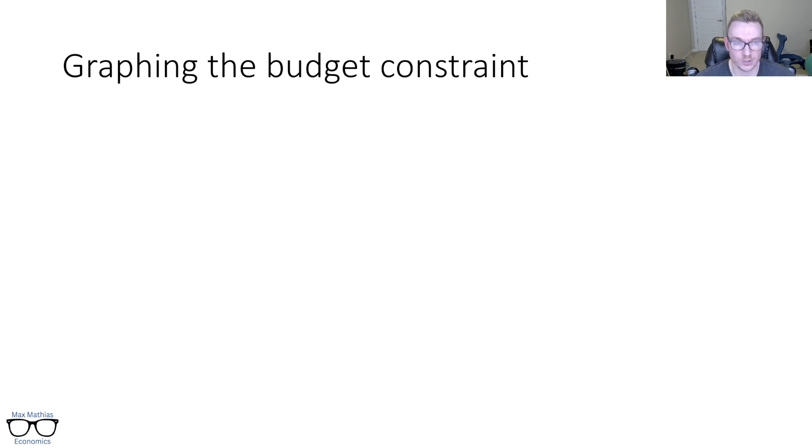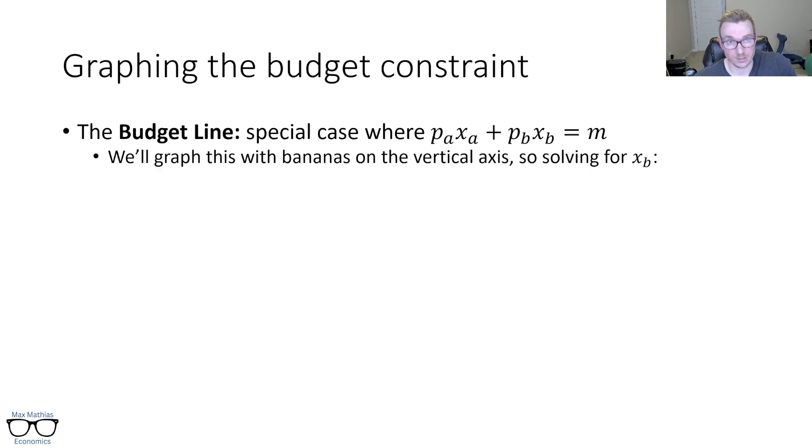To actually graph this budget constraint, there's a special case, which we call the budget line. I know I'm throwing a lot of vocabulary at you. Use the pause button whenever you need it. Basically, the budget line is just a special case where that total amount of money I'm spending on apples and bananas exactly equals my income. So to go back to the last example, I'm spending exactly $50. So we are going to graph this line and just arbitrarily, I'll put bananas on the vertical axis. So if we wanted to then solve this kind of equation for X_B to make it in slope intercept form so we can graph it, it looks something like this. Amount of bananas is m over p_b minus p_a over p_b times apples.